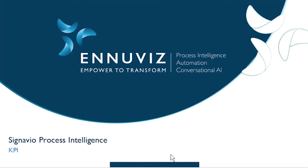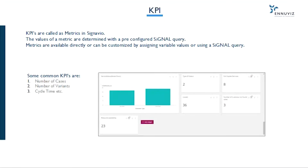Hi, everyone. Today I'm going to talk about KPIs in Signavio Process Intelligence. What are KPIs? KPI stands for Key Performance Indicator, a quantifiable measure of performance over time for a specific objective.